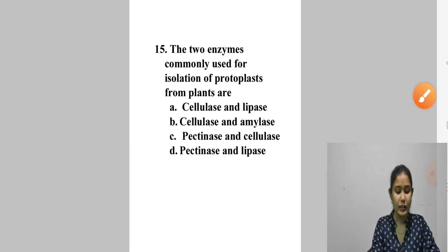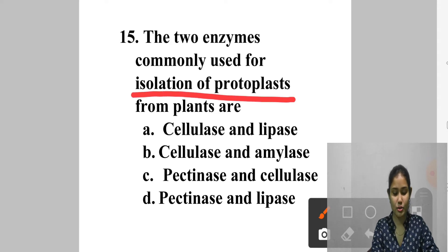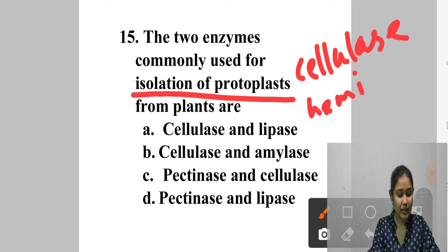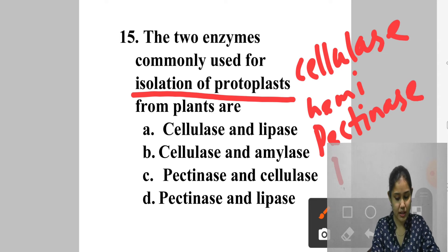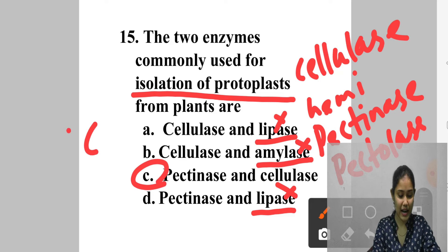Question 15: The two enzymes commonly used for isolation of protoplast from plants. Protoplasts can be isolated from plant tissues such as leaves, stems, roots, flowers, anthers, and pollens using hydrolytic enzymes like cellulase, hemicellulase, pectinase, and pectolase. Options: A. Cellulase and lipase — lipase is not used. B. Cellulase and amylase — amylase is not used. C. Pectinase and cellulase — correct. D. Pectinase and lipase — lipase is not used. Answer is option C — pectinase and cellulase.